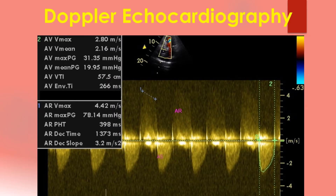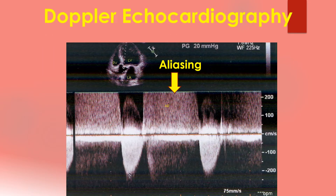Doppler echocardiography uses the Doppler principle and targets the moving red blood cells. The velocity at each point is depicted as a spectral tracing. In pulsed Doppler, intermittent pulses are sent and echoes received. In continuous wave Doppler, the signals are sent and received continuously. Flow away from the transducer is depicted below the baseline and those towards the transducer are depicted above the baseline.